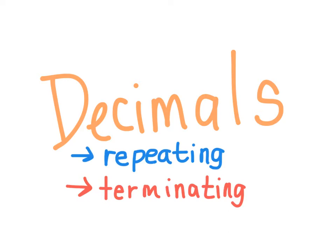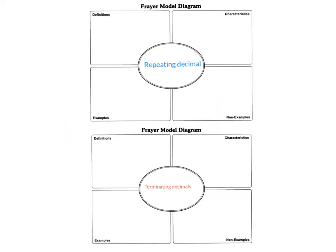We're going to be using Frayer models to examine these vocabulary words. So you're going to set up two Frayer models. We are going to provide handouts. If you're at home, you can just recreate these boxes on notebook paper.